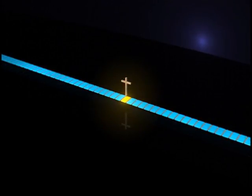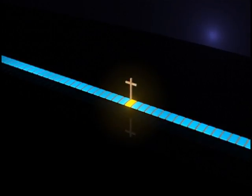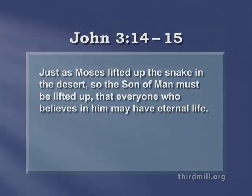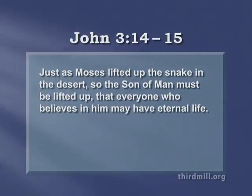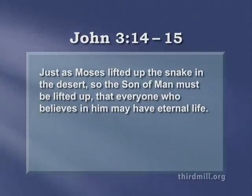Most frequently, however, New Testament writers did not use any special terminology when they noted biblical typologies. They simply linked or associated particular Old and New Testament elements with each other. For instance, listen to the way Jesus spoke of a typological connection between Moses' bronze serpent and himself in John chapter 3 verses 14 and 15: Just as Moses lifted up the snake in the desert, so the Son of man must be lifted up that everyone who believes in him may have eternal life. In this passage, Jesus compared the bronze serpent with his crucifixion without any special terminology. But we can still say that the serpent was a type of the crucifixion and that the crucifixion was the anti-type of the serpent.